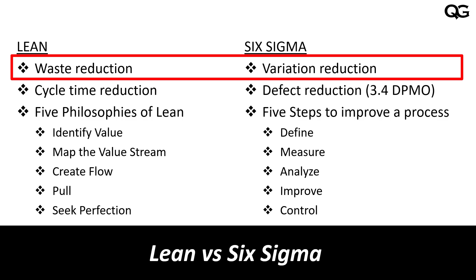What we want is consistency — that is what six sigma does: it reduces variation. Whereas in lean, we look at the wastes in our process and want to eliminate them. So basically the intent of both is the same — to improve the process — but the focus is slightly different.